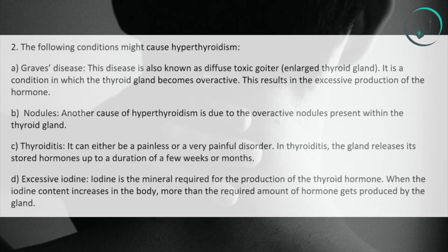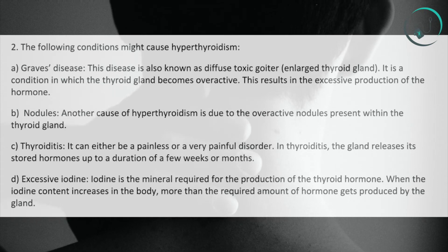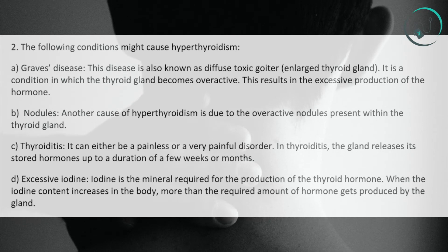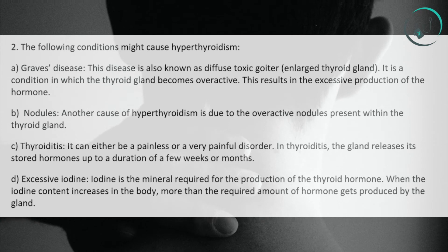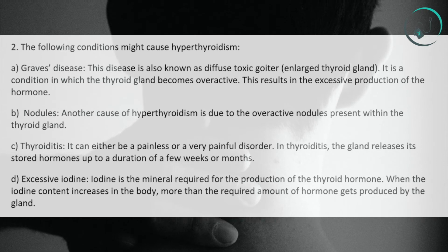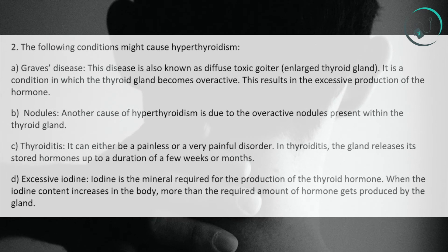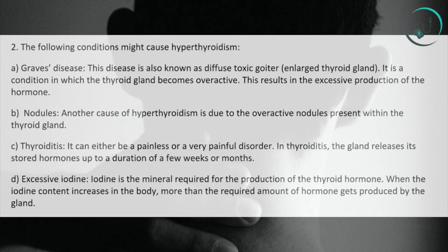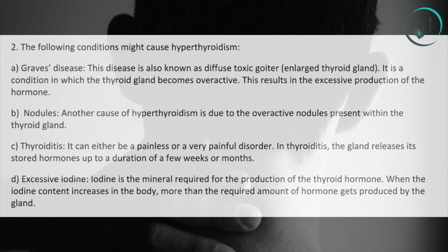The following conditions might cause hyperthyroidism. A. Graves' Disease: Also known as diffuse toxic goiter, this is a condition in which the thyroid gland becomes overactive, resulting in the excessive production of the hormone. B. Nodules: Another cause of hyperthyroidism is due to overactive nodules present within the thyroid gland. C. Thyroiditis: It can either be a painless or a very painful disorder in which the gland releases its stored hormones over a duration of a few weeks or months.